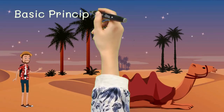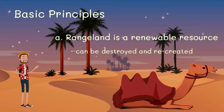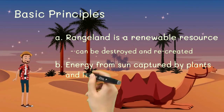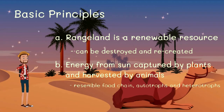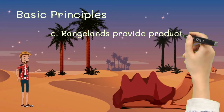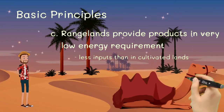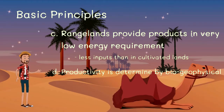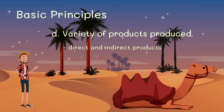These are the basic principles of range management. Rangeland is a renewable resource. Energy from the sun can be captured by green plants that can only be harvested by grazing animals. Rangeland supplies humans with food and fiber at very low energy costs compared to those associated with cultivated lands. Rangeland productivity is determined by the characteristics of soil, topography, and climate. A variety of products including food, fiber, water, recreation, wildlife, minerals, and timber are harvested from rangelands.